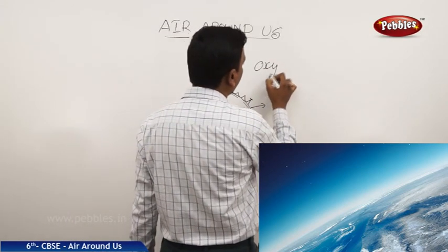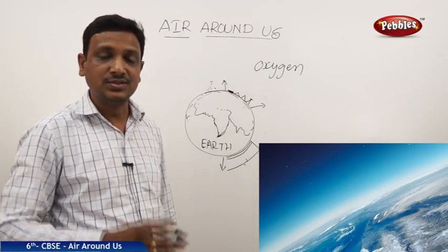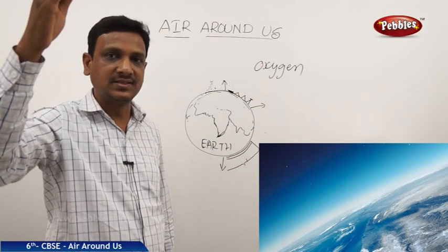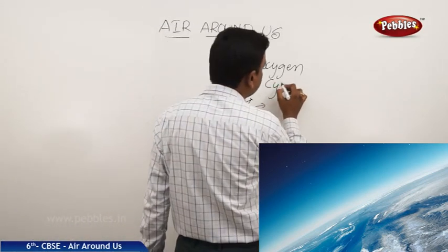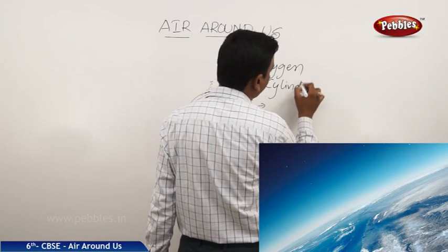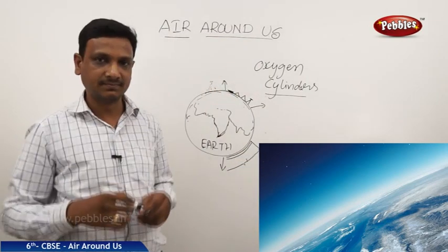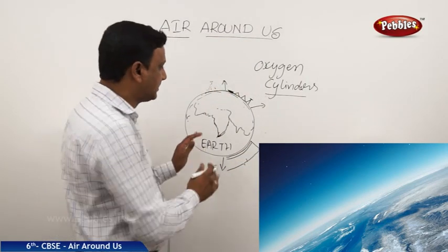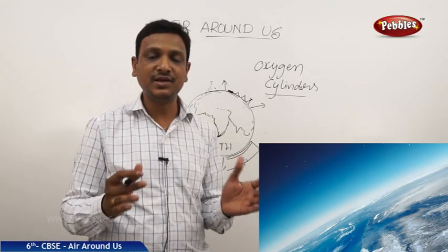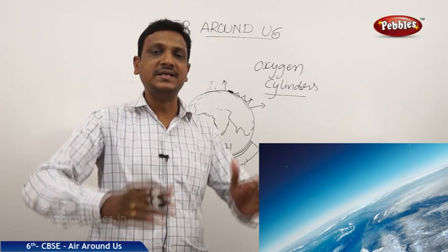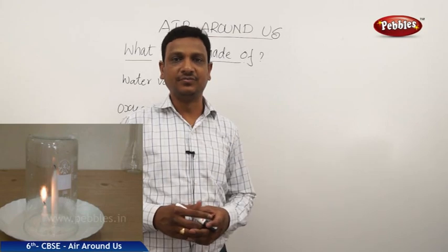Because mountains are very high above sea level, at that height the oxygen level or the air level is less, so mountaineers carry oxygen cylinders. The Earth is surrounded by a layer of air called the atmosphere, and the density of the atmosphere goes on decreasing as you go higher. The percentage of air decreases. Now let's see the composition of air.